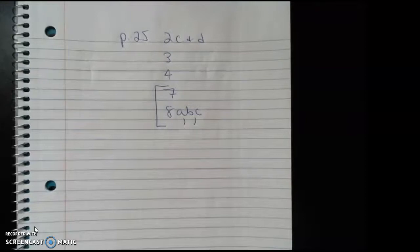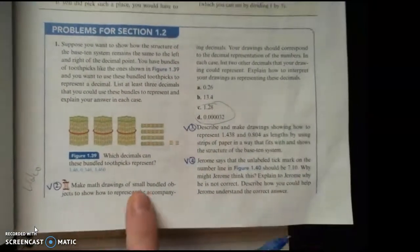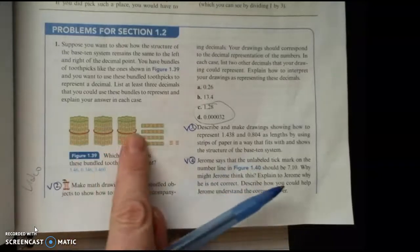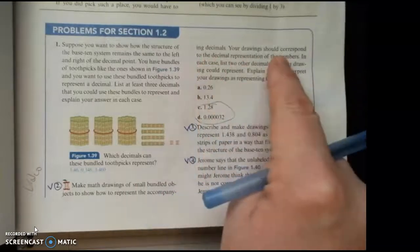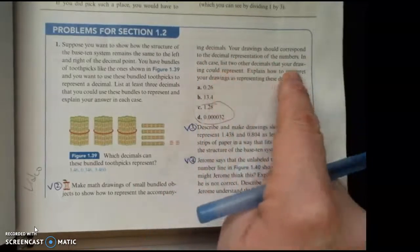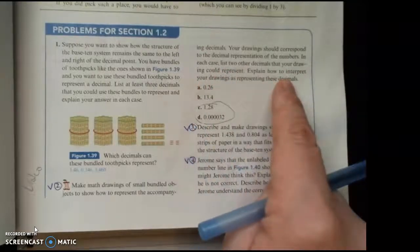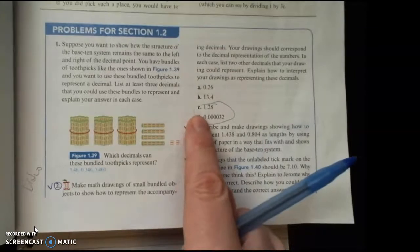All right, so let's look at the book. First of all, it says make a math drawing of small bundled objects. We could do this or we could do base 10 blocks. And then let's see, we want to correspond to the decimal representation. List two other decimals that your drawing could represent. Explain how to interpret your drawing as representing these decimals. And I just wanted you to do C and D.